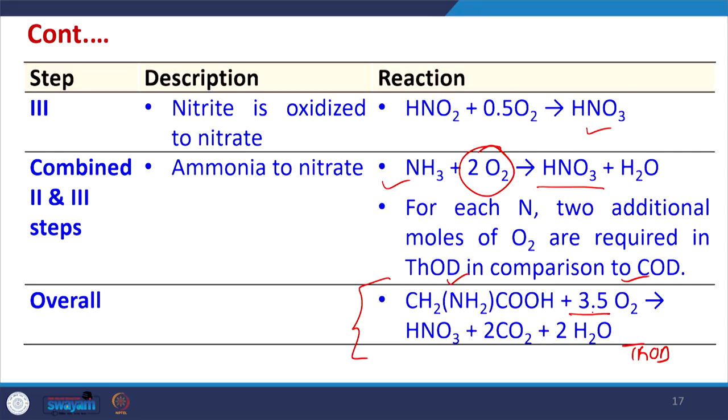For glycine, the COD calculation requires 1.5 moles of oxygen whereas THOD requires 3.5 moles — 2 additional moles of oxygen are required per nitrogen atom. We will take further examples for calculating COD and THOD in the next class.